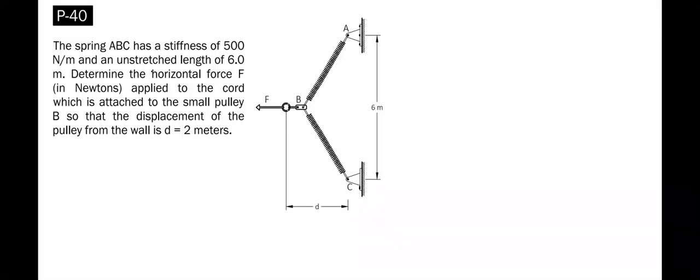We are given a spring ABC with a stiffness of 500 newtons per meter and an unstretched length of 6 meters. We are tasked to determine the horizontal force F applied to the cord attached to the small pulley P so that the displacement of the pulley from the wall is D equals 2 meters.